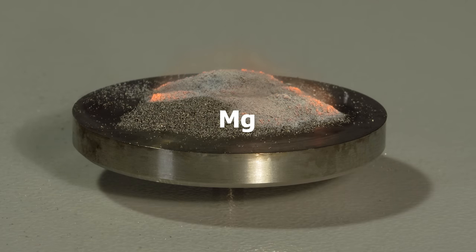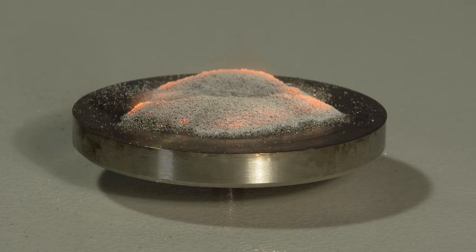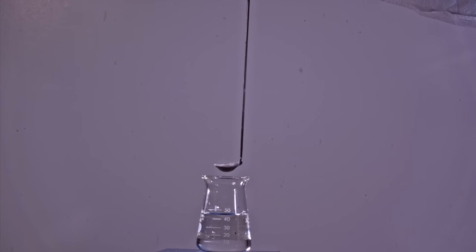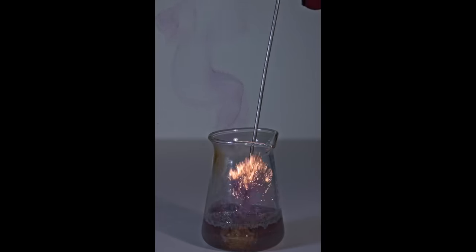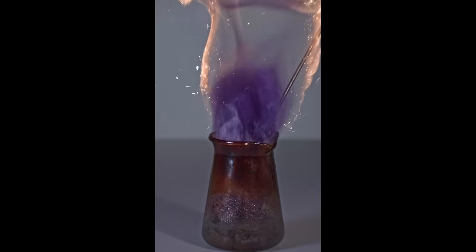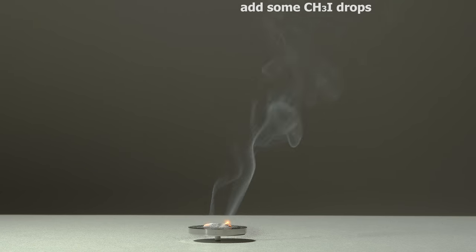Burning magnesium actively decomposes chloroalkanes. I already dropped burning magnesium in methylene chloride, chloroform and carbon tetrachloride. Now it's time to try out the same thing with iodine-containing hydrocarbons. Methyl iodide is the first one to go.